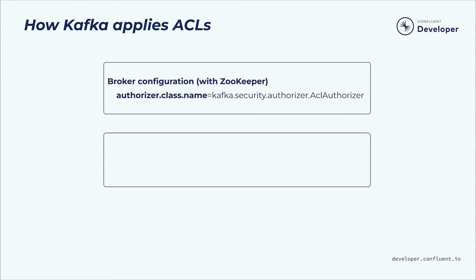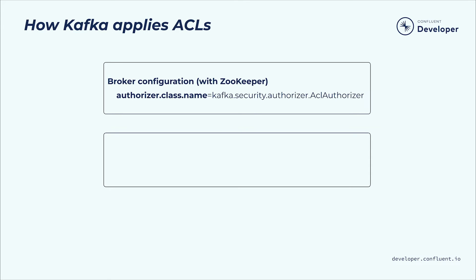The configuration is: authorizer.class.name=kafka.security.authorizer.AclAuthorizer. If you are using Kafka's native consensus implementation based on KRaft rather than ZooKeeper, then Kafka uses a new built-in authorizer called Standard Authorizer that does not depend on ZooKeeper. This means you can now run a Kafka cluster without needing ZooKeeper for consensus or security. Standard Authorizer stores its ACLs in the __cluster_metadata topic, and it is used by default in KRaft clusters.